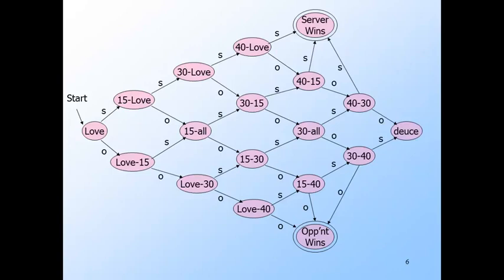From the 40-15 state, if the server wins the point, we go to the server-won state; but if the opponent wins, we go to a new state called 40-30. A similar thing happens from 15-40, and from 30-all we can go to either 40-30 or 30-40. From state 40-30, if the server wins the next point, they've won the game. But if the opponent wins, the game is tied — the name for this state is 'deuce.' The deuce state is quite interesting: it remembers that the game is tied, but neither the sequence of wins and losses nor how many points have been played.